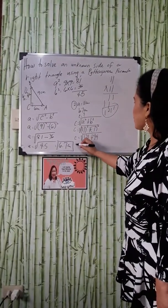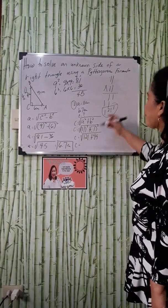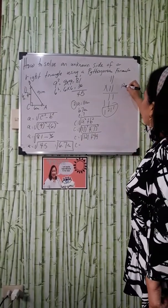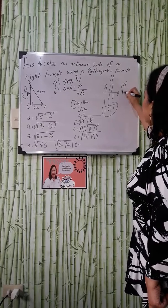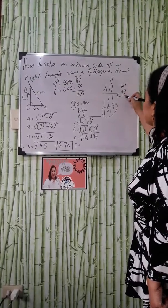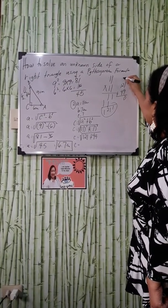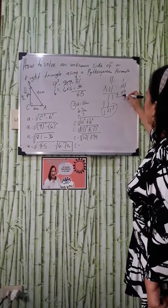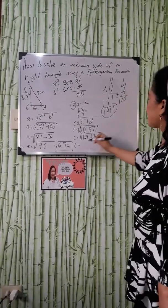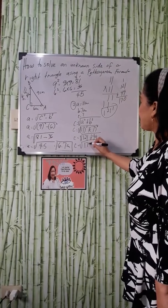C is equal to, you have to add 121 plus 49. 1 plus 9 is 0, 10, carry 1. 3 and 7, 170. That will be equal to 170.